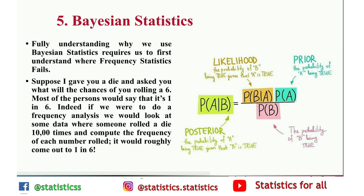The fifth topic is Bayesian statistics. To understand why we use Bayesian statistics, we first need to understand where frequentist statistics fails. Frequentist statistics is the type of stats that most people think about when they hear the word probability — it involves applying math to analyze the probability of some event occurring, where specifically the only data we compute is prior data.